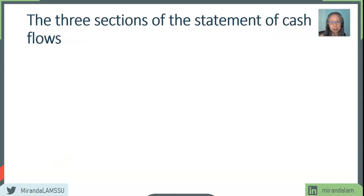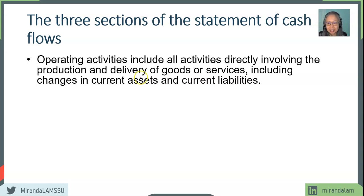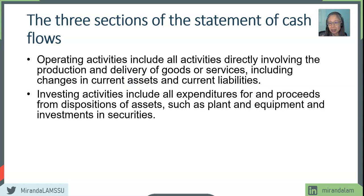To construct the statement of cash flow, we recognize there are three main sections. The first and most focused-on section is the operating section, which includes all activities directly involved in the day-to-day operation of the firm. This naturally includes all items in the income statement up to operating income, and changes in current assets and current liabilities from the balance sheet — these are the recurring operations. Investing activity includes expenditures as well as income from purchases or sales of assets, particularly plant and equipment, as well as securities.